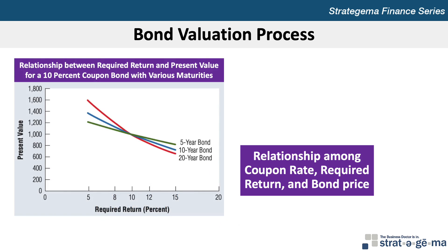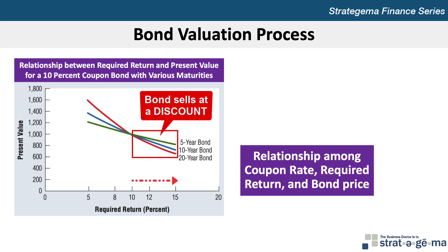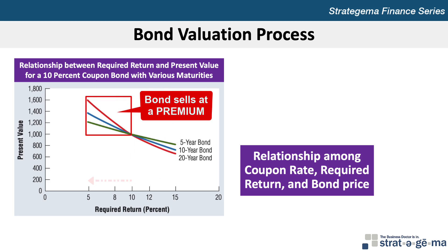This exhibit shows the relationship between required return and present value for a 10% coupon bond with various maturities. Regardless of the maturity period, when the required rate and coupon rate are the same — in this case 10% — a $1,000 bond will sell at its par value. As the rate of return increases, the bond will sell at a discount, and at any return less than the coupon rate, the bond will sell at a premium.